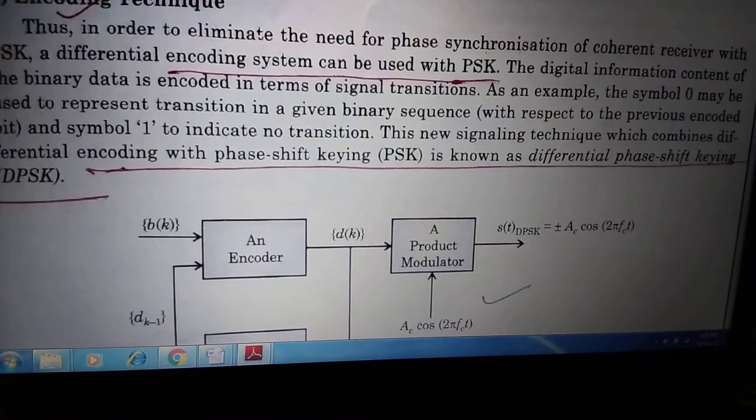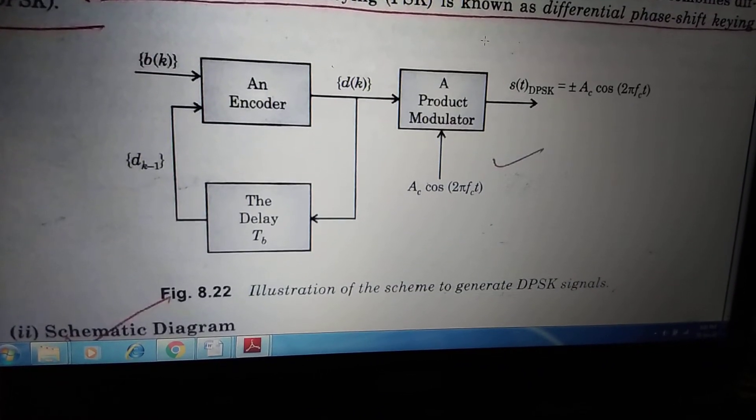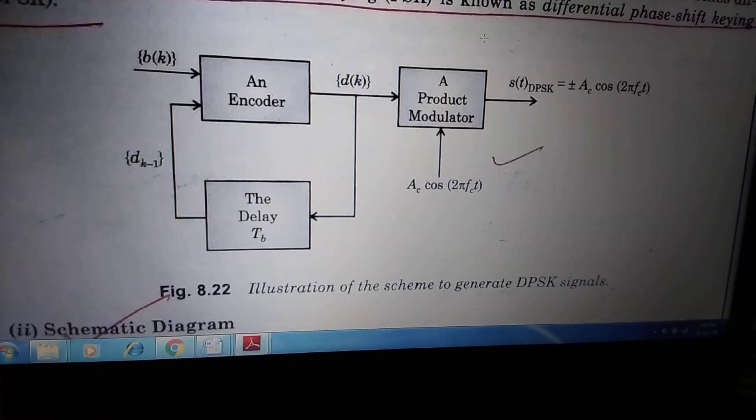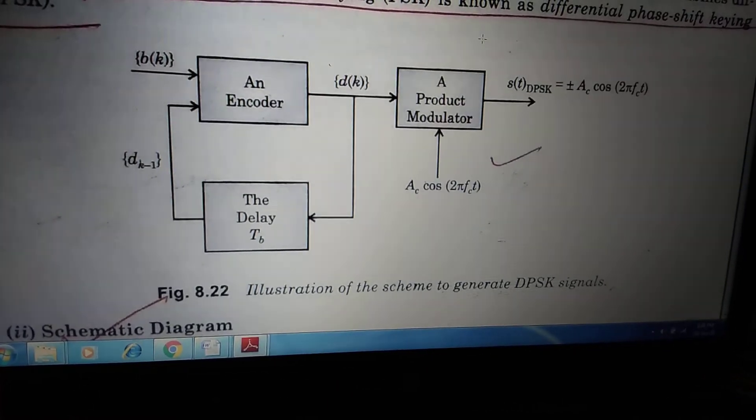Now we will start at the generation of the DPSK. So if you see, that is the block figure number 8.22, according to this figure, is the block diagram of the DPSK. Block diagram of the generation of the DPSK.